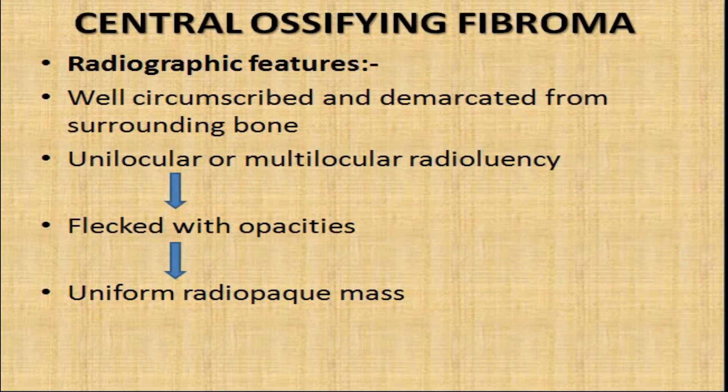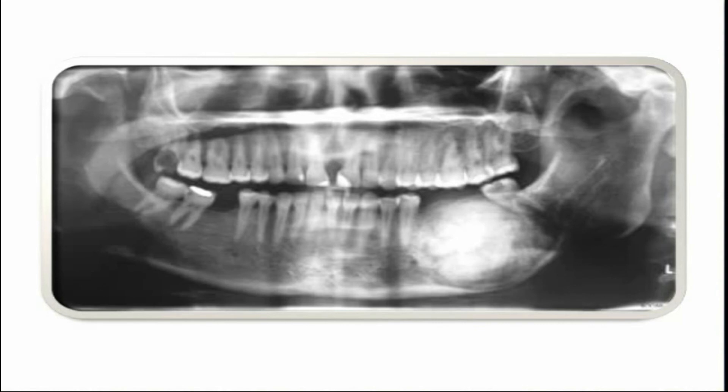Radiographic features: we see a well-circumscribed lesion demarcated from the surrounding bone. Initially, there are unilocular or multilocular radiolucencies. Later, these are flecked with opacities, meaning there are increasing depositions. Finally, a uniform radiopaque mass develops. In this OPG, you can appreciate the lesion on the lower left back region.